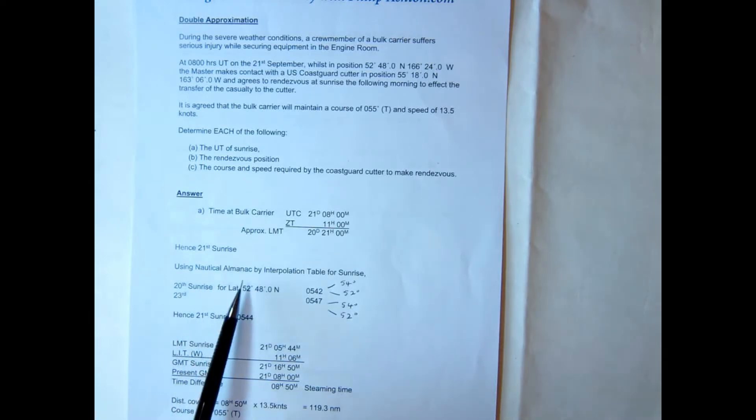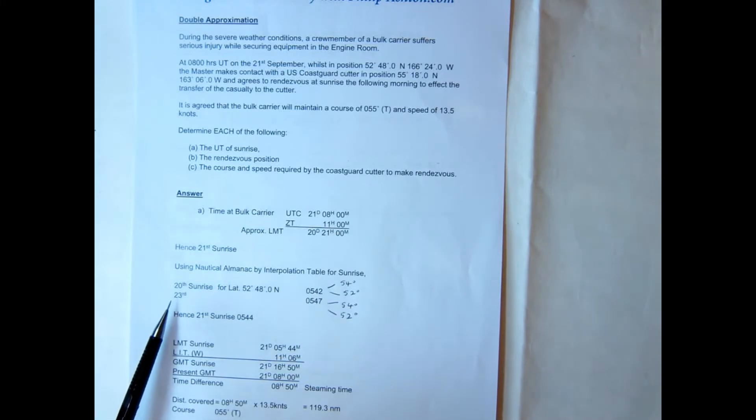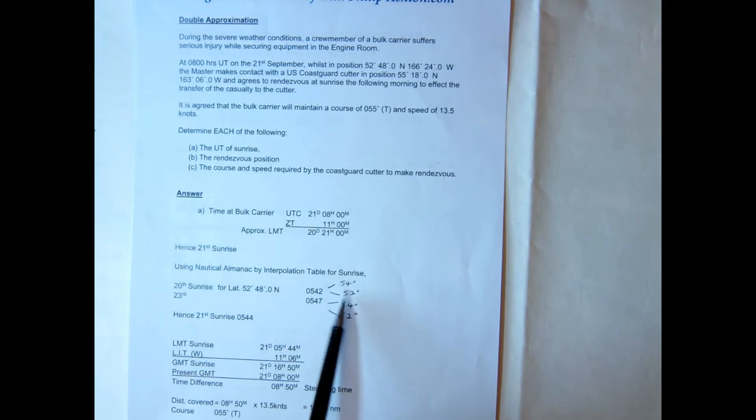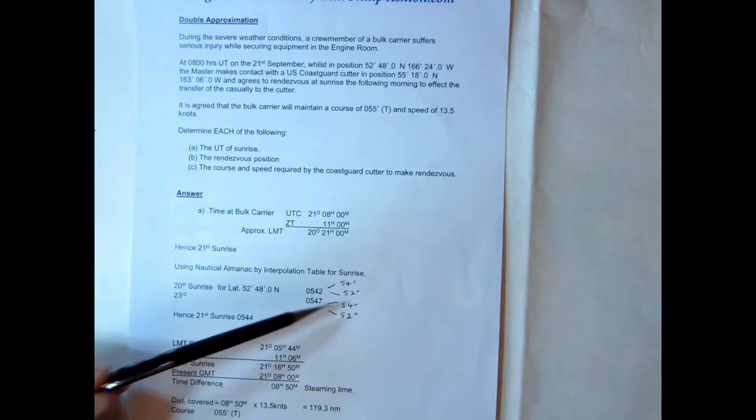So we go into the nautical almanac and we find that it's actually not the middle day. So the middle day is the 20th and the middle day on the next day is the 23rd. And when we look at 52 degrees and 54 degrees in the times for sunrise, the local times, we see that it's 0542 for both. And when we go to the 23rd at 52 and 54, it's 0547 for both. So there's no individual interpolation to do between 52 and 54 degrees.